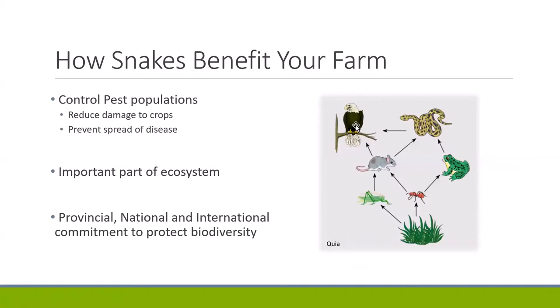One way that snakes are beneficial to your farm is through their diet. Snakes control pest populations by preying on rodents, insects, and slugs, reducing damage to crops and preventing disease from spreading. Snakes are both a predator and prey in the food web — an important component in maintaining the balance of a healthy functioning ecosystem. We also have provincial, national, and international commitment to protect biodiversity.